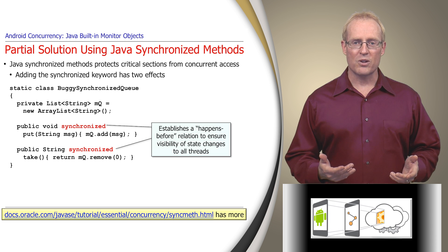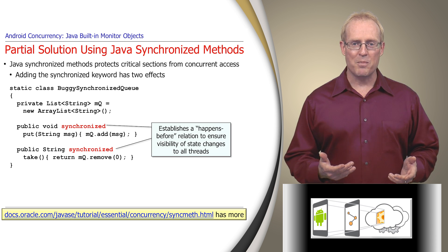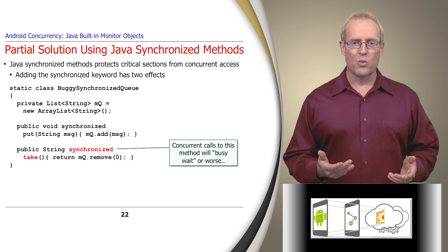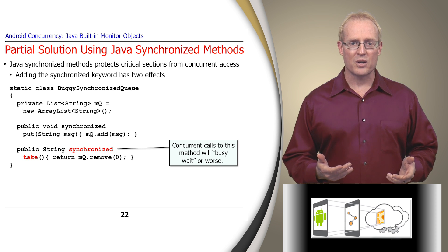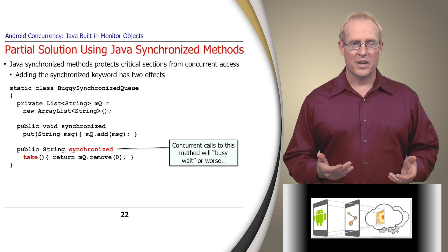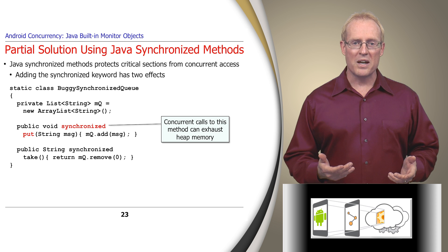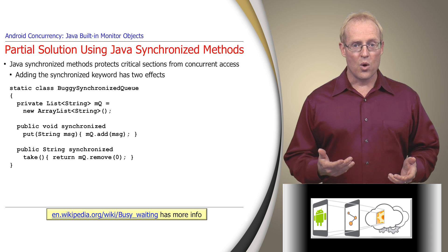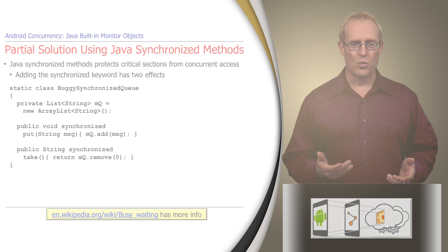Although using synchronized ensures that put and take critical sections can't be accessed concurrently by multiple threads, there are still some problems with this solution. For example, the take method will waste CPU cycles by spinning in a busy wait, throwing an IndexOutOfBoundsException whenever the remove method is called on an empty ArrayList. Likewise, the put method could continue adding new messages to the ArrayList until heap memory is exhausted. This limitation is addressed by Java built-in monitor objects, which we'll cover next.